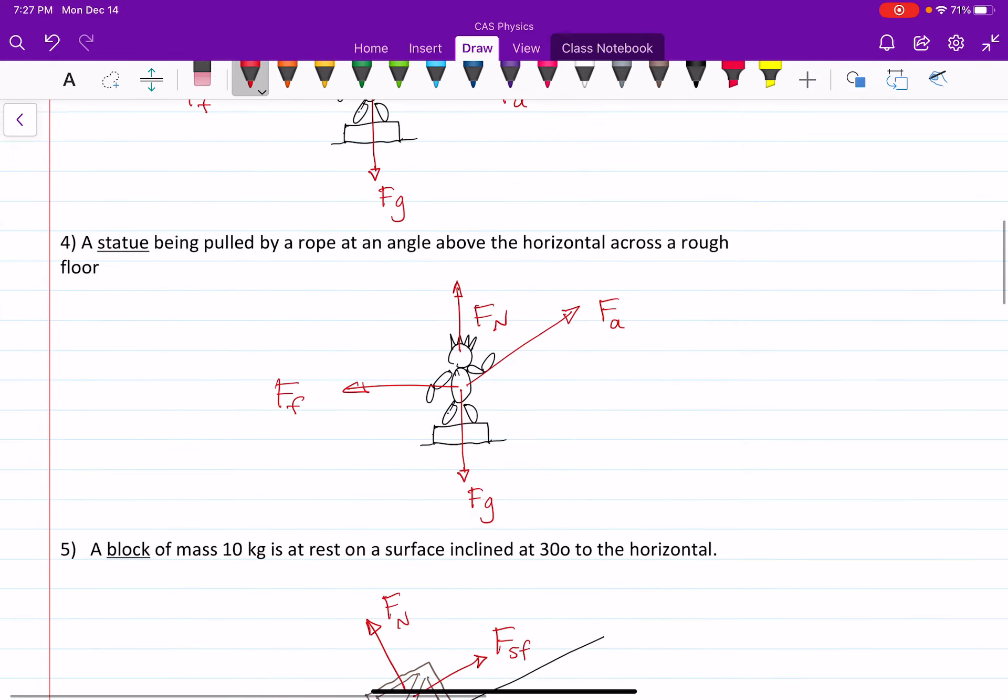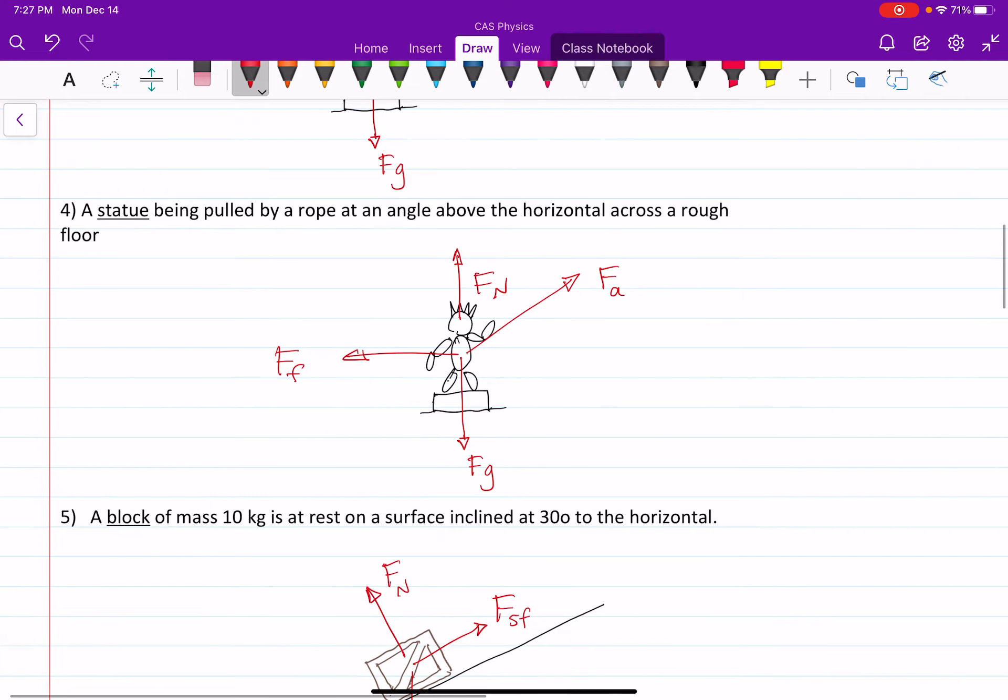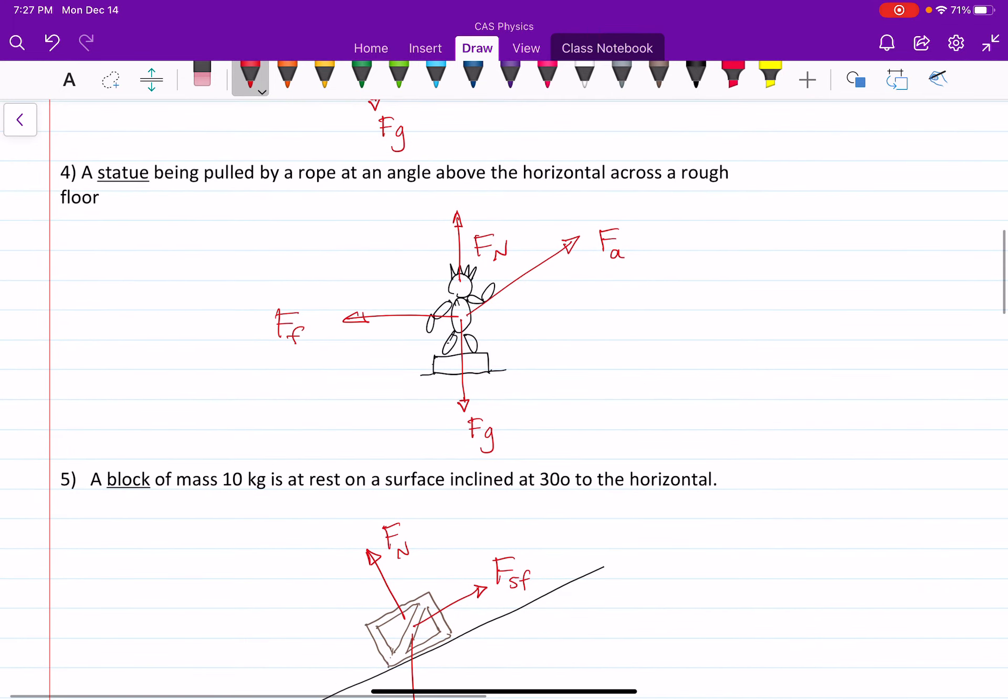Finally, the last part of this statue question says it's being pulled by a rope at an angle above the horizontal across a rough floor. So in this case, this is the angle above. So I don't know what the angle is. Maybe it's theta. But the applied force is being applied at that sort of random angle above the horizontal. But otherwise, your forces are the same. The normal force, force of gravity and friction, again, because it says a rough floor.